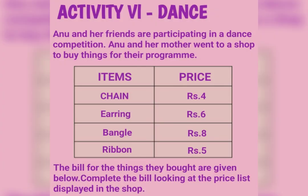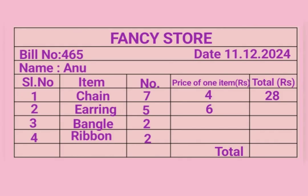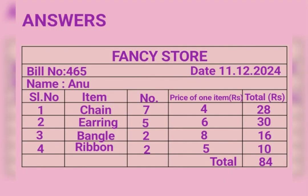Activity 6: Dance. Anu and her friends are participating in a dance competition. Anu and her mother went to a shop to buy things for their program. Items and prices: Chain Rs. 4, Earring Rs. 6, Bangle Rs. 8, Ribbon Rs. 5. The bill for the things they bought is given below. Complete the bill looking at the price list displayed in the shop. Now let's complete the bill.